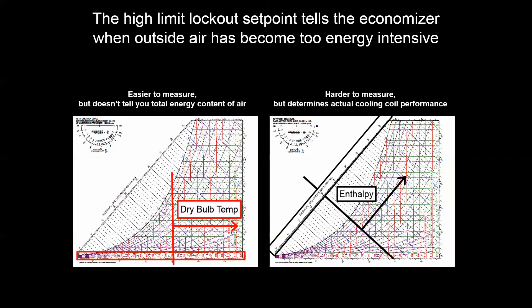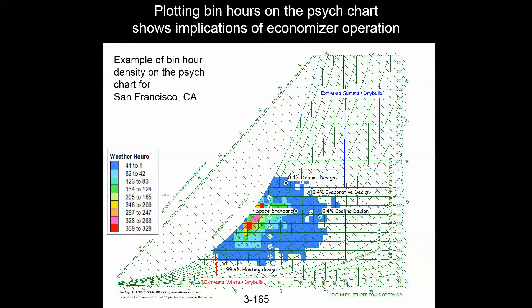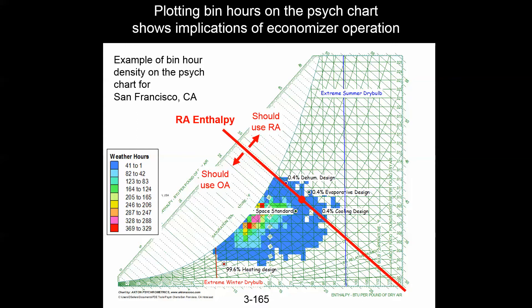Oftentimes we make a compromise. Looking at bin data, we select an economizer lockout temperature. We start by defining the design return air condition — in this case 75 degrees and 50% relative humidity — which has a specific enthalpy associated with it. Ideally, whenever outside conditions are below that enthalpy we'd be using outside air, and whenever outside conditions are above that constant enthalpy line we'd be using return air.